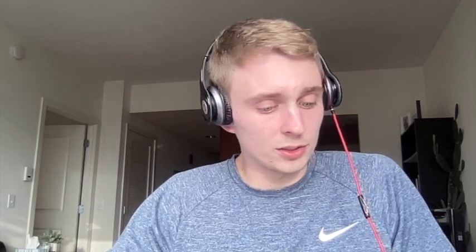Dilated cardiomyopathy is a systolic dysfunction that leads to a weakened, dilated heart. It's the most common type of cardiomyopathy overall. Risk factors show it's more common in 20- to 60-year-old men. Etiologies: idiopathic is most common, possibly familial. Infections — viral is most common, especially enteroviruses like Coxsackie B virus. Post-viral myocarditis, HIV, Lyme disease, parvovirus B19, and Chagas disease are also causes.